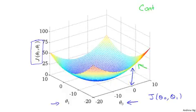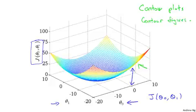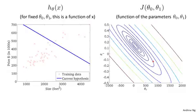Now, for the purpose of illustration, in the rest of this video, I'm not actually going to use these sorts of 3D surfaces to show you the cost function j. Instead, I'm going to use contour plots or what are also called contour figures. Here's an example of a contour figure shown on the right, where the axes are theta 0 and theta 1.